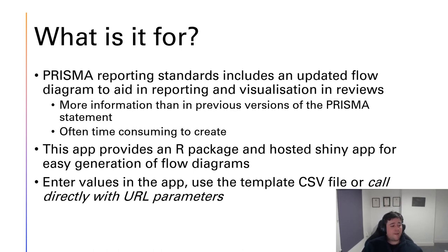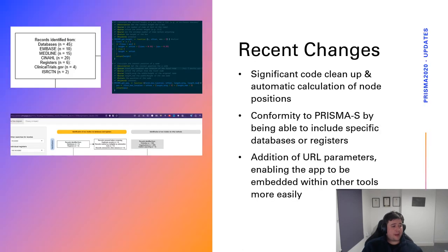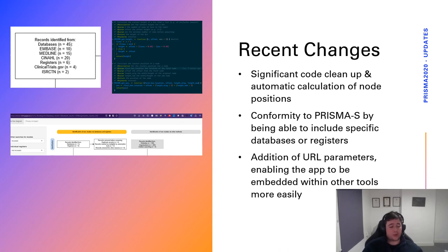Over the past year we've made some significant updates. There was a big code cleanup last summer, and the automatic calculation of node positions is now part of the app, so instead of relying on manually calculated and entered values for where each box goes, they're calculated relative to each other.